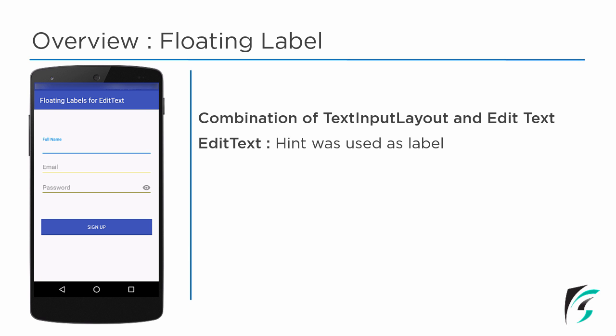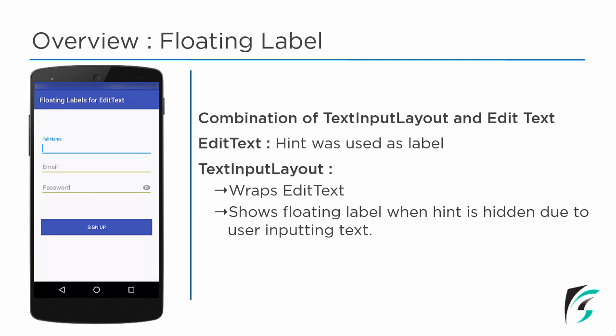With the introduction of the floating label in Android Material Design, the text input layout was introduced. This text input layout provides us with a few advanced features for the edit text. The edit text is the child view of the text input layout. With the text input layout, when the user starts inputting text, the hint is removed and a floating label appears above the edit text.